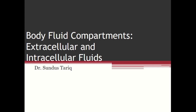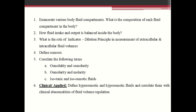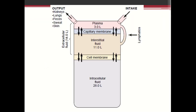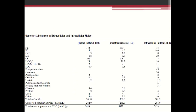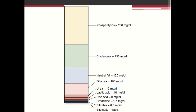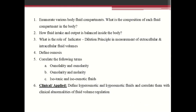Good afternoon students. As you all know, we have been discussing body fluid compartments and the role of extracellular and intracellular fluid. First we will revise the previous lecture and then move forward. We discussed the first objective: enumerating various body fluid compartments and their composition, including the major cations and anions of extracellular and intracellular fluid and other substances present in various compartments.